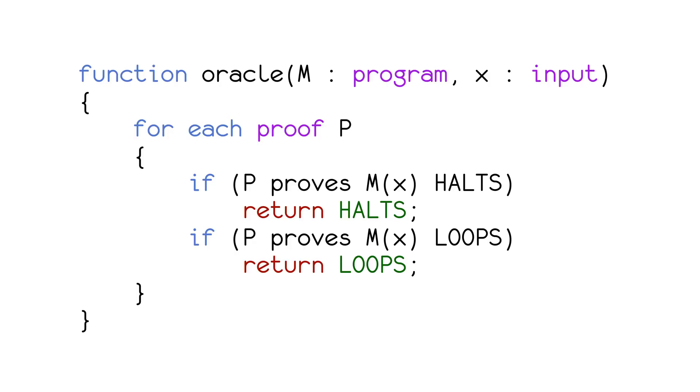There are two ways in which our program would fail to correctly determine if a program halts or loops. The first way in which this program might fail is if the program loops forever and never ends. However, we know that programs must either loop or halt, so the only way for this program to never halt is if it never finds a proof of either. For some M and X, we can't find a proof of either M loops or M halts, even though one of those must be true, which means our math system would be incomplete.